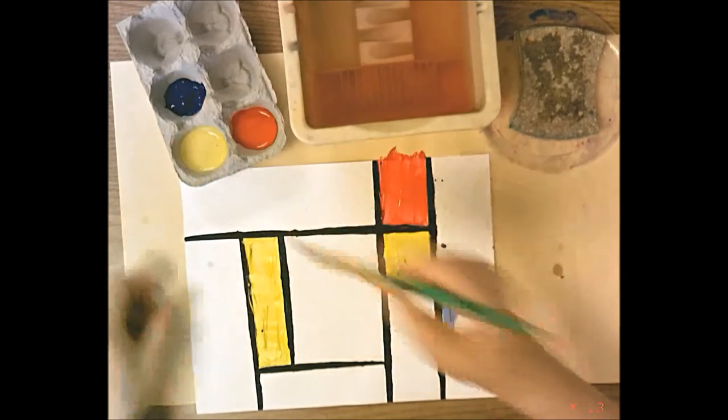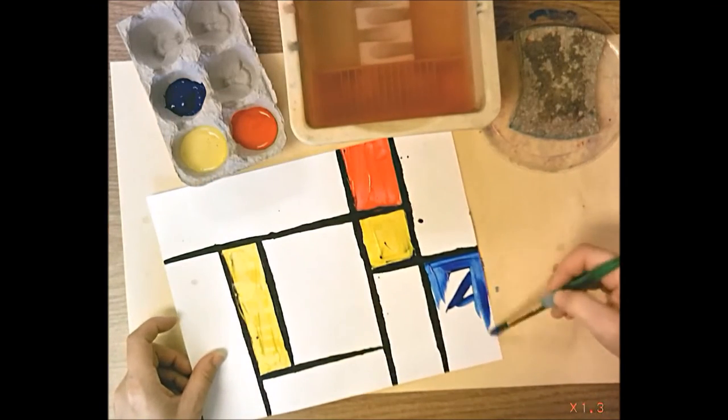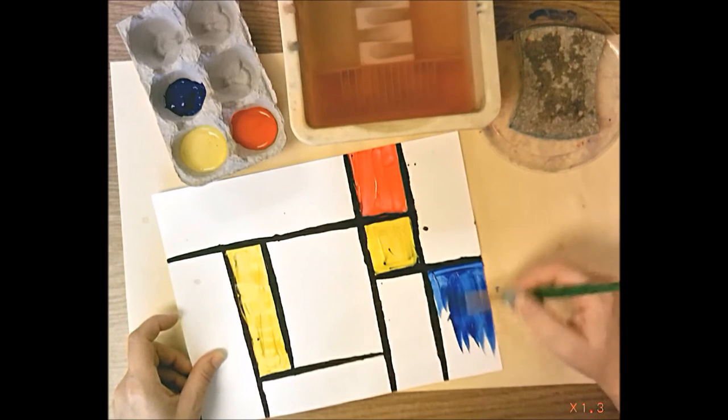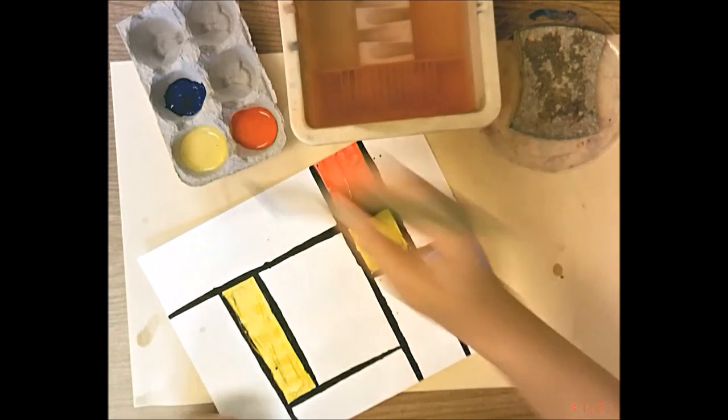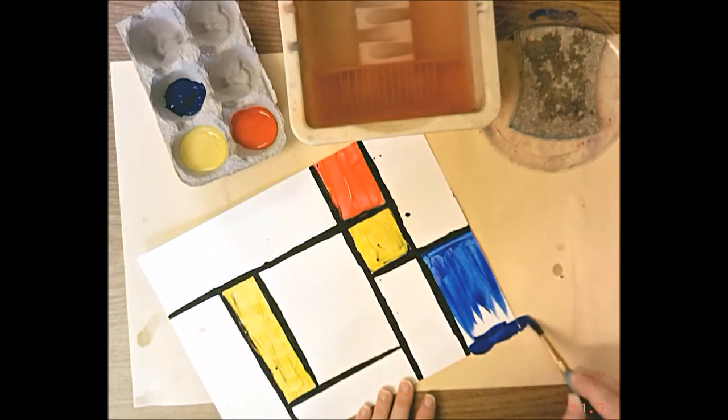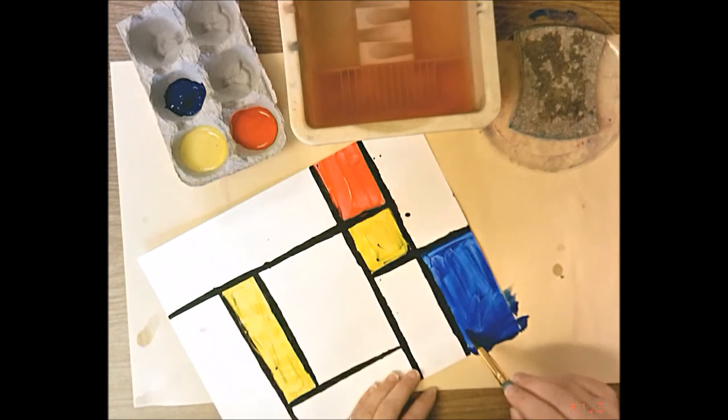You have brown paper or manila paper under your work so that you can paint the edges of your paper and not get paint on the table. So that's why I'm scooting my paper up a little bit, because I'm going to be painting the bottom edge of this, and I only want to get paint on this manila paper and not on the table.